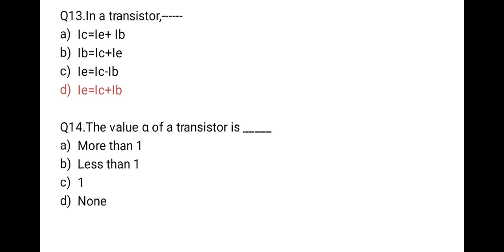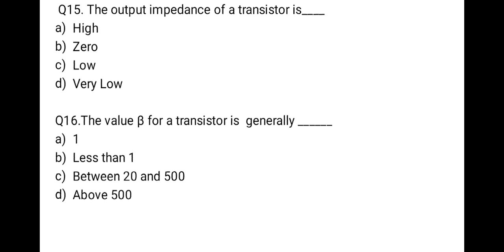The next question: the value of alpha of a transistor is — alpha is the current gain of the common-base (CB) configuration, so the correct option is less than one.